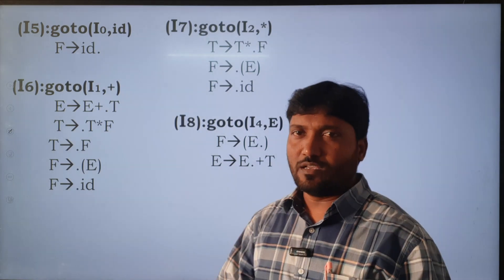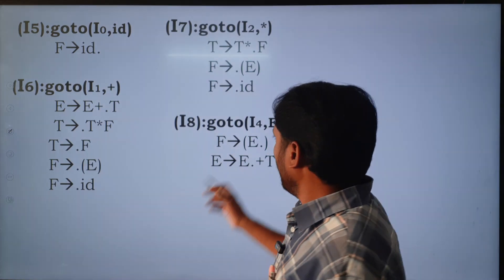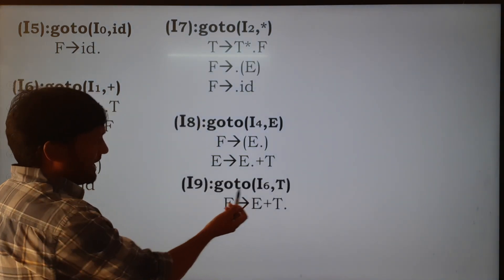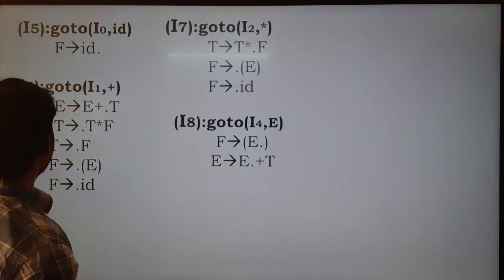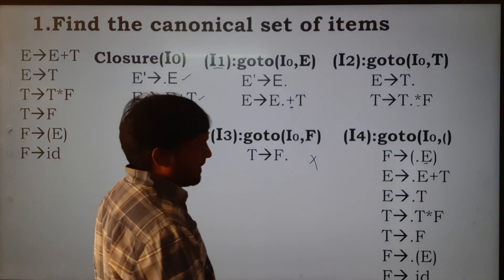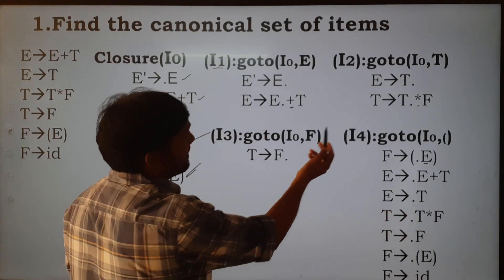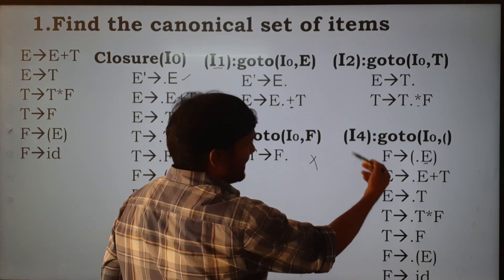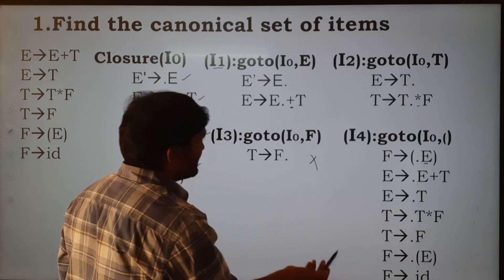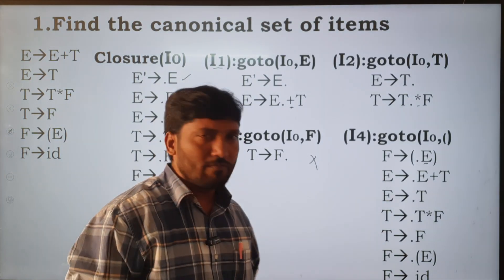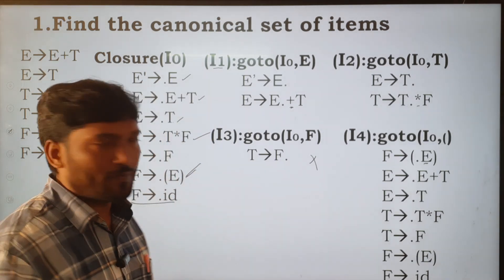Next is goto for I6. In I4, T is already ended in I2, F is already ended in I3, open bracket is already ended in I4, and id is ended in I5. So no need to apply goto for those remaining symbols in I4. Next come to I6.